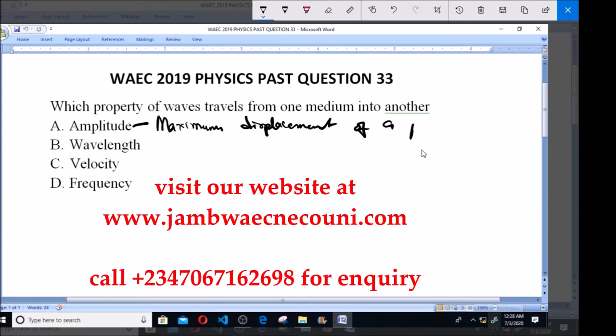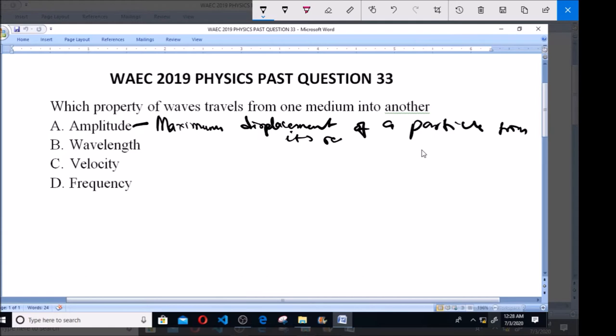Then wavelength. What is wavelength? Wavelength is the distance between successive crests or troughs of a wave. Distance between successive crests or troughs.